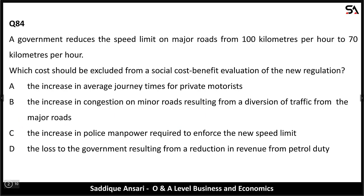A government reduces the speed limit on major roads from 100 kilometers per hour to 70 kilometers per hour. Which costs should be excluded from a social cost-benefit evaluation of the new regulation? Let's read the options.